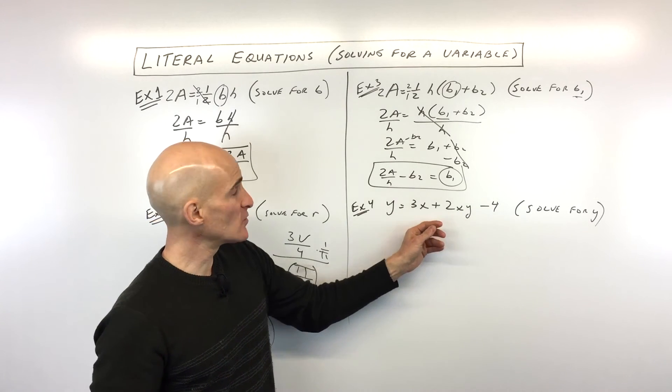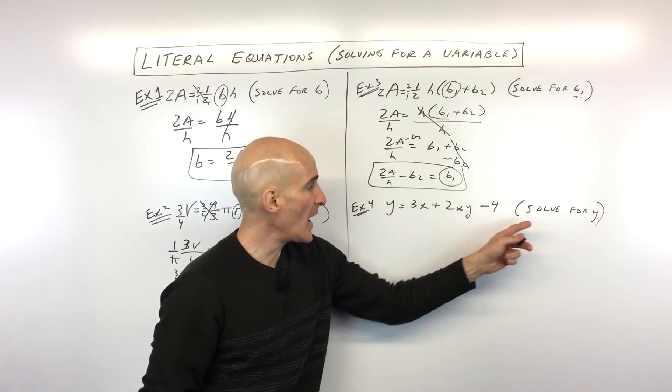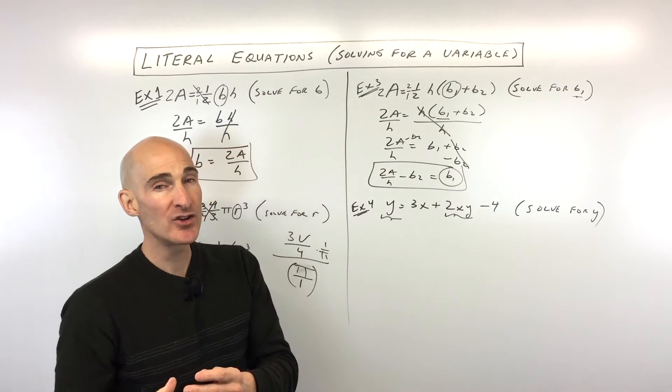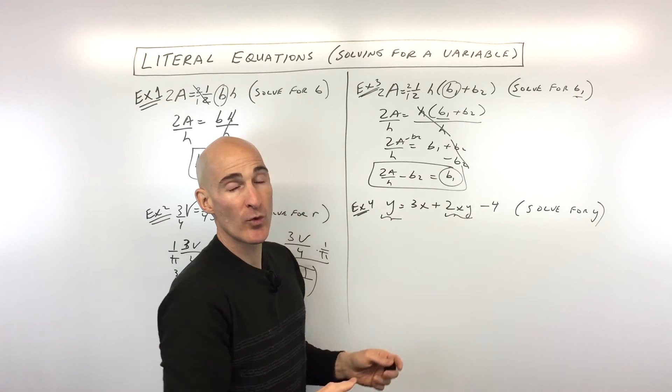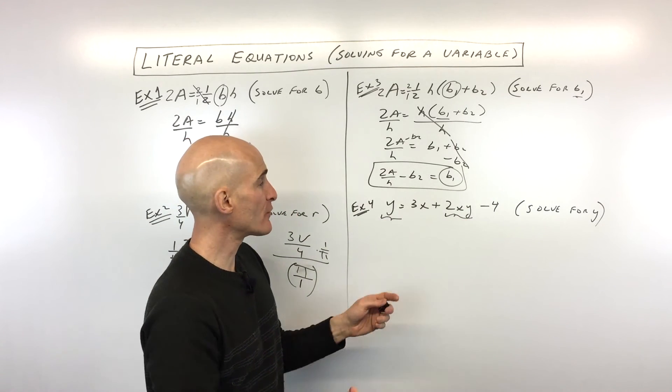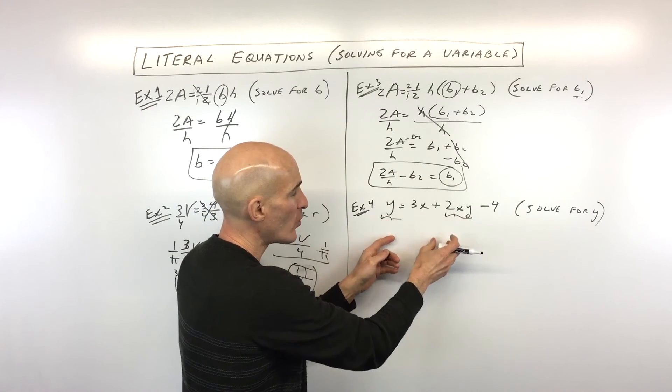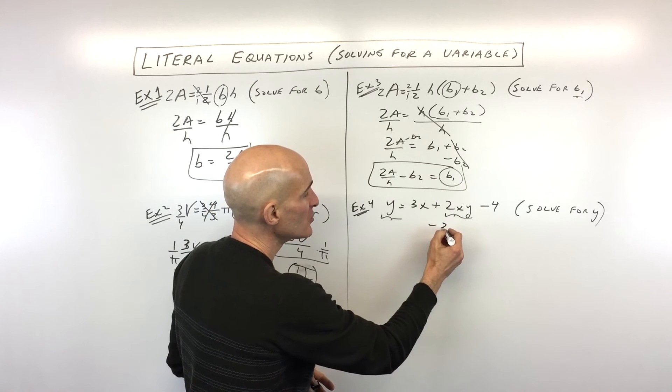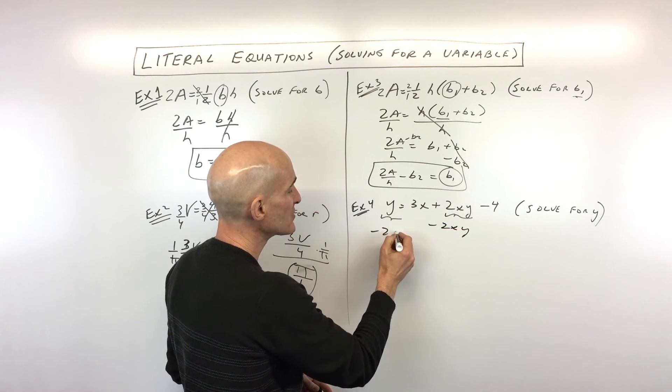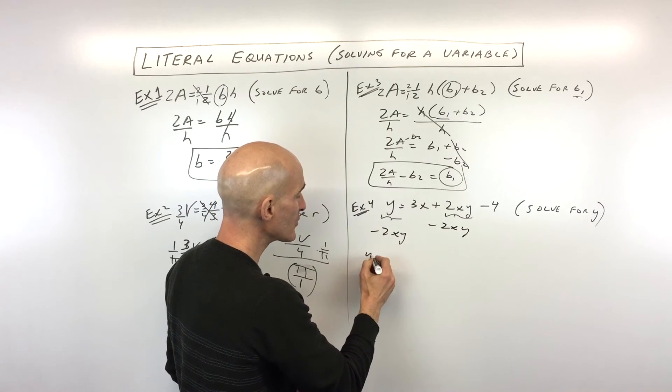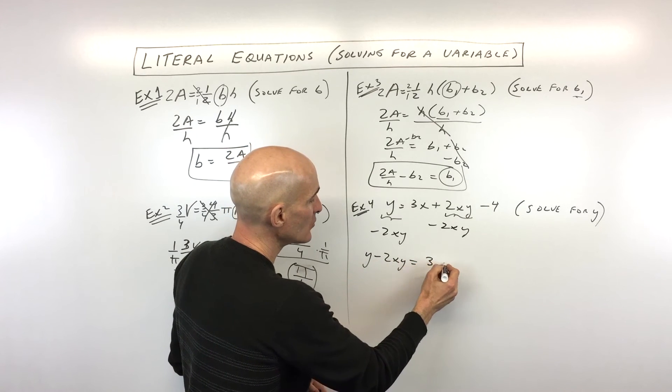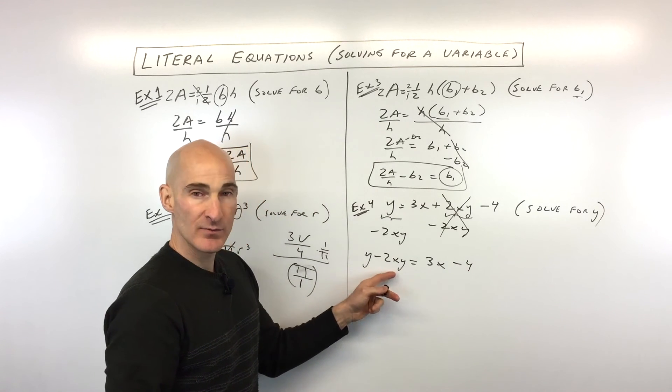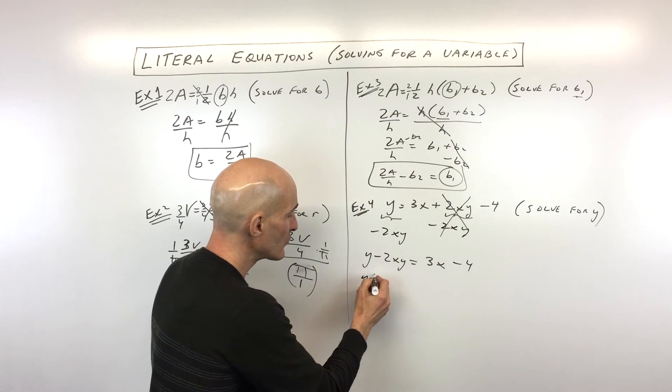Okay, last example. This one's a little bit more challenging because we're trying to solve for Y. And you can see there's a Y in this term as well as in this term. So what you want to do when you're trying to solve for a variable and there's more than one term that has that desired variable is you want to group those terms together on one side of the equation that have that desired variable. Everything else you want to get on the other side. So what I'm going to do is I'm going to subtract 2XY from both sides. So what we have here is we have Y minus 2XY equals 3X. These are canceling, right? Minus 4.